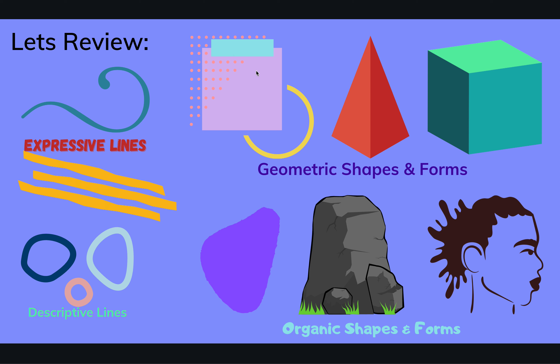We also learned about geometric shapes and forms. Geometric shapes are two-dimensional — the square, the rectangle, and even this circle are examples of shapes. They can be measured two ways: their height and their width. Geometric forms are three-dimensional. Three-dimensional shapes can be measured three different ways: their height, their width, and of course how deep, how far back they go into space.